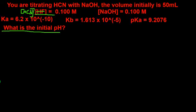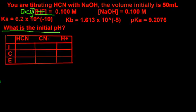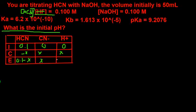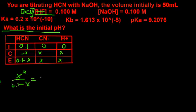The question we're addressing is the initial pH. How do we find the initial pH? We break out our handy dandy ICE table. The concentration of HCN initially is 0.1 molar, with 0 and 0 for the products. The change row is minus x, x, x. The equilibrium row is 0.1 minus x, x, x. We set up x squared over (0.1 minus x) equals our Ka, which is 6.2 times 10 to the negative 10.